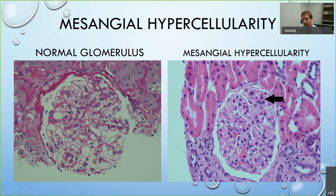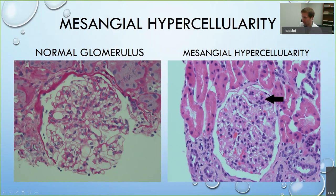There was one biopsy during residency where the interventional radiologist gave me 150 glomeruli to count — I had to count every single one to give an accurate M-score. That biopsy took about two hours. If more than 50% of the glomeruli show mesangial hypercellularity, the patient gets M1, meaning higher risk of needing dialysis within 10 years than a patient with M0.